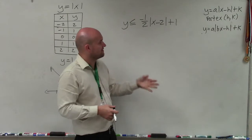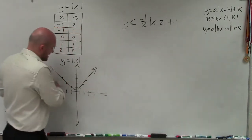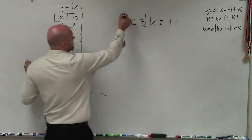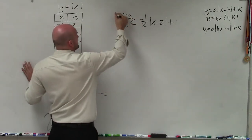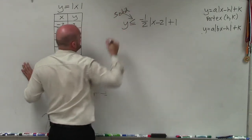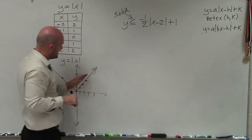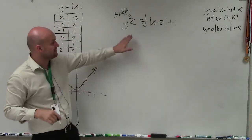The first thing we like to do is always identify what about our graph is going to be part of the solution or not. To determine that, we can just look at our inequality symbol. Since that's less than or equal to, and not just less than, then we know it's going to be solid. That means any point that is on this equation is going to make this inequality true.